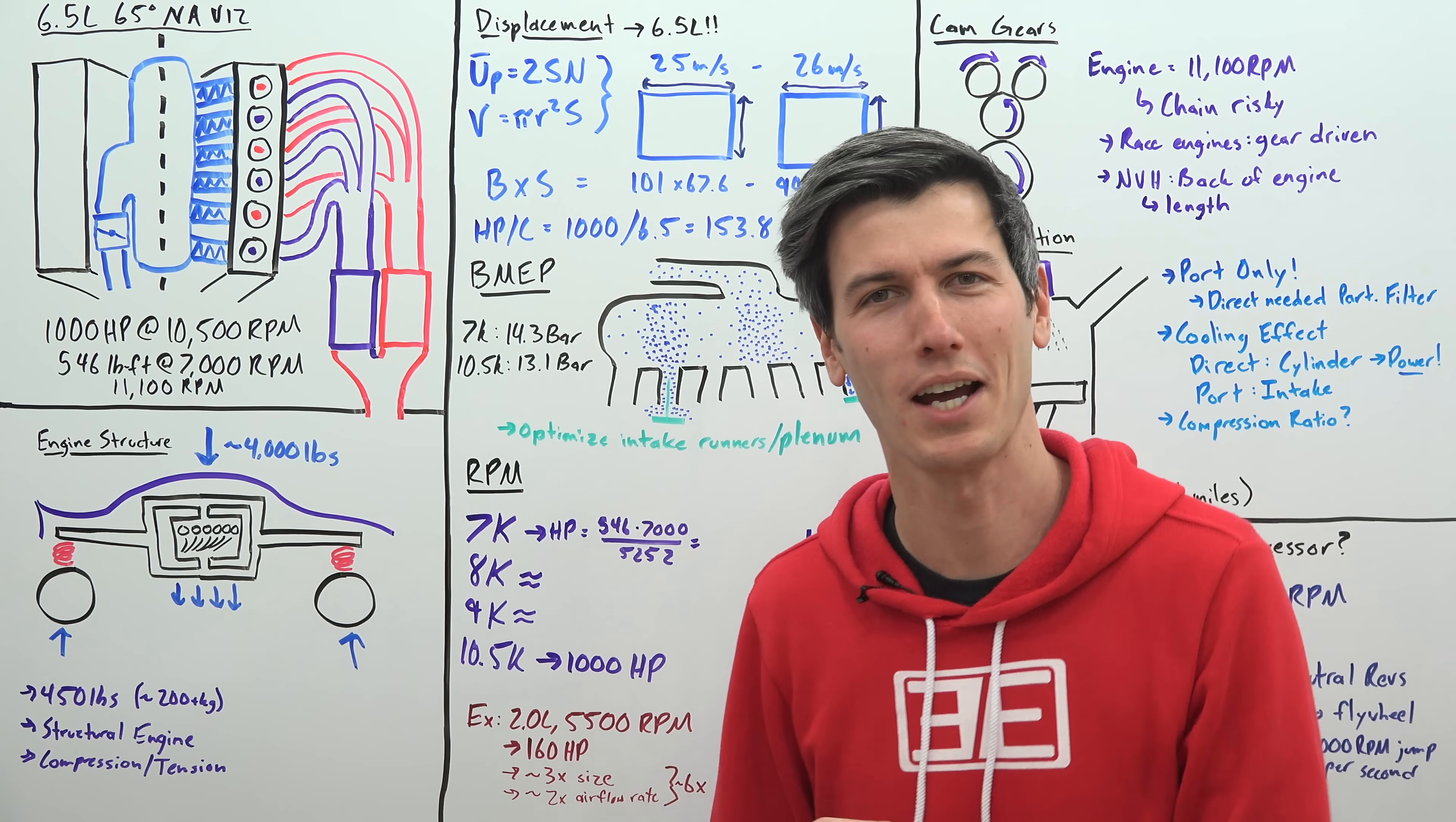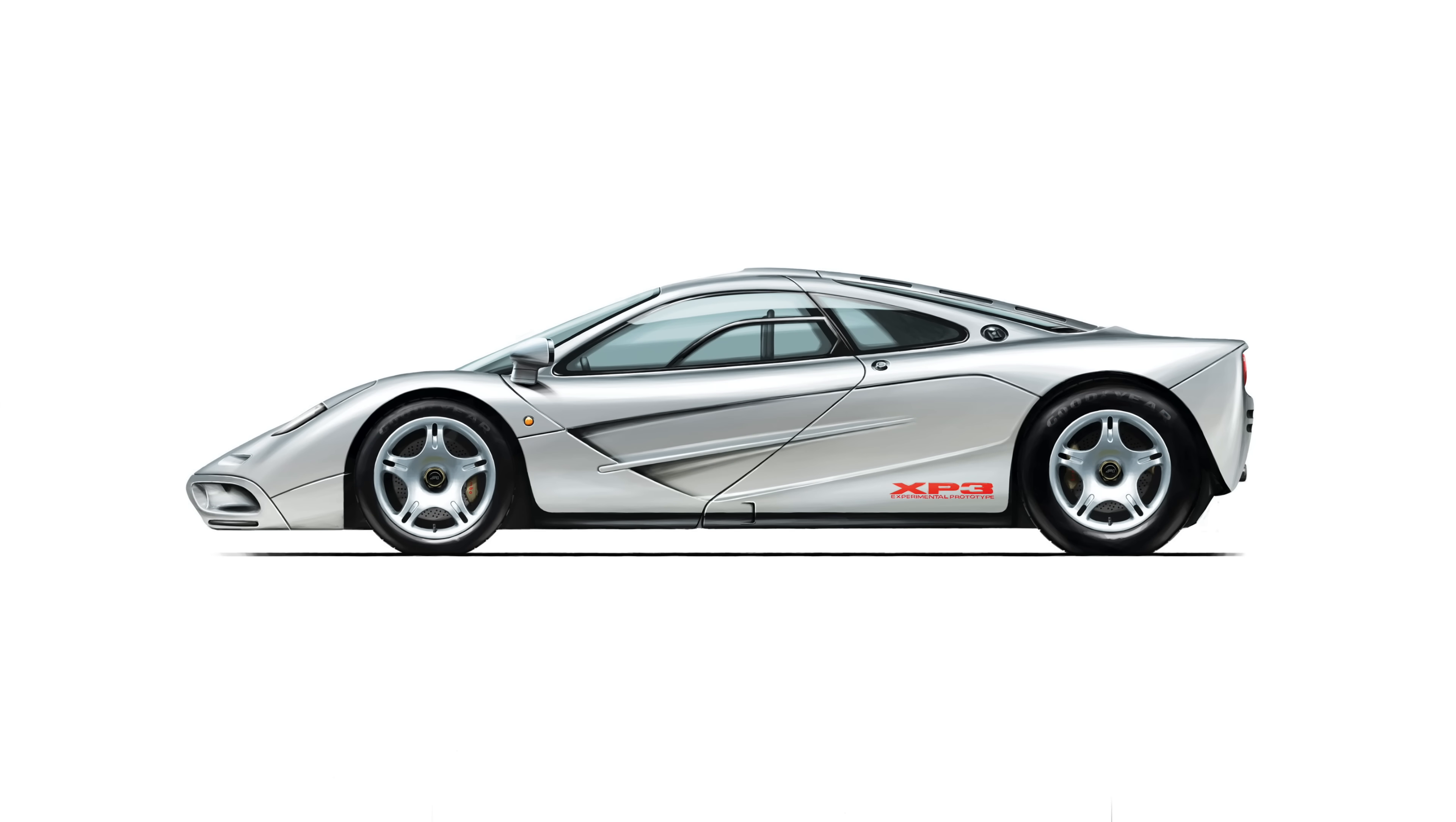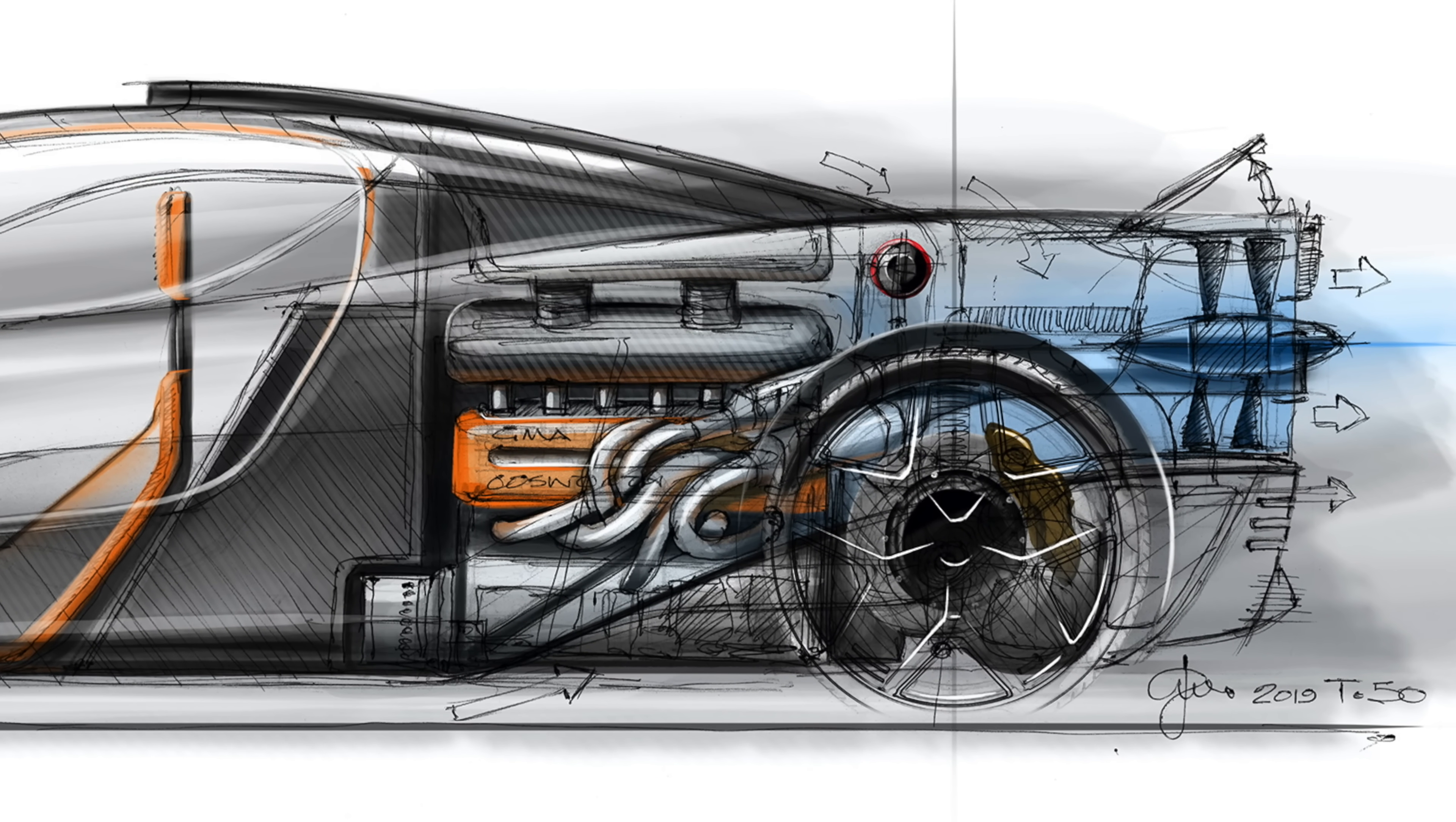So that is going to be the main topic of this video and we're also going to look at another engine used in the Gordon Murray T50 which in many ways is the successor to the McLaren F1 which also has a very impressive naturally aspirated very high revving over 12,000 rpm engine going in it.